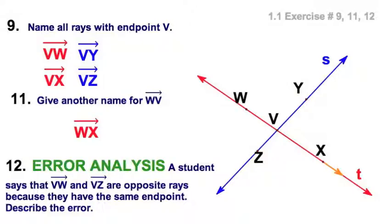And finally, for an error analysis, you'll see a lot of these questions in this textbook. VW and VZ, they have a common endpoint. VW is here, VZ is here. But they're clearly not opposite rays, because they have a common endpoint. But they would form what we call an angle. They have a common endpoint, which is known as a vertex. But they are not in opposite directions, because the three points W, V, and Z are not collinear. So they're not opposite rays. Instead, they form an angle.